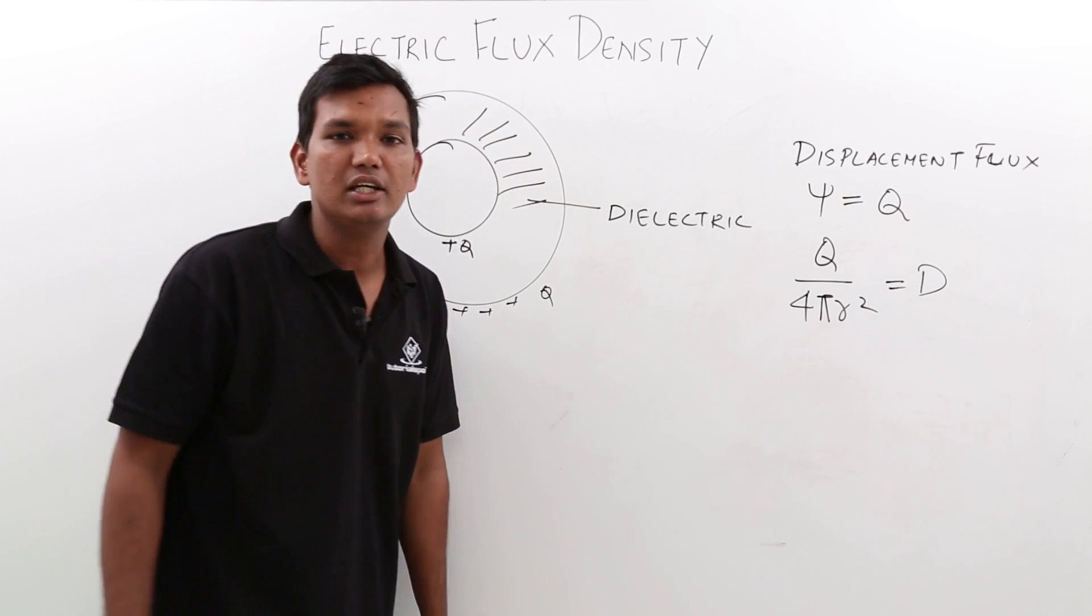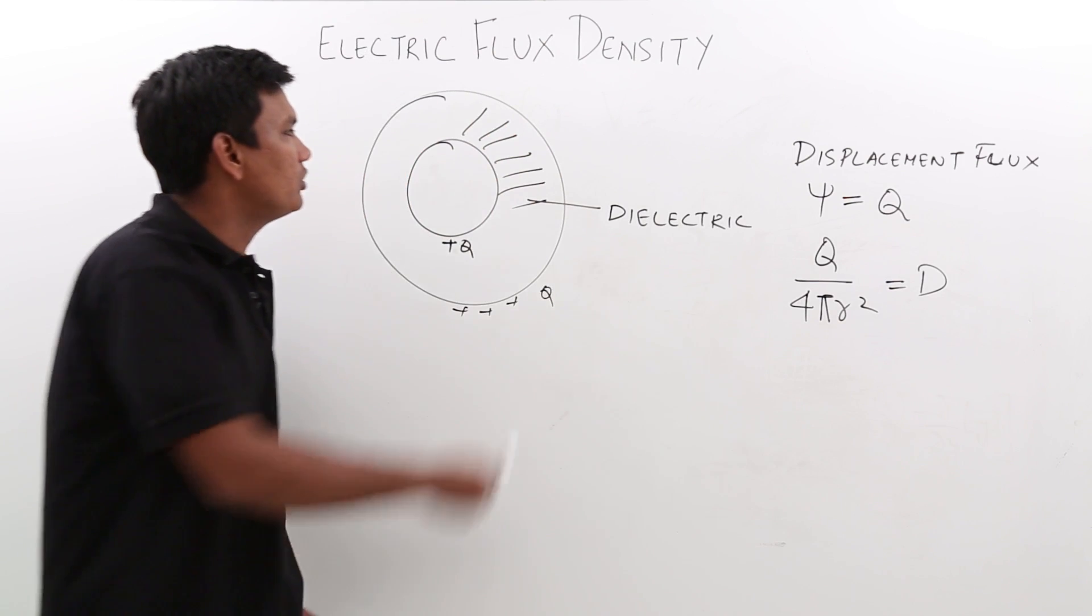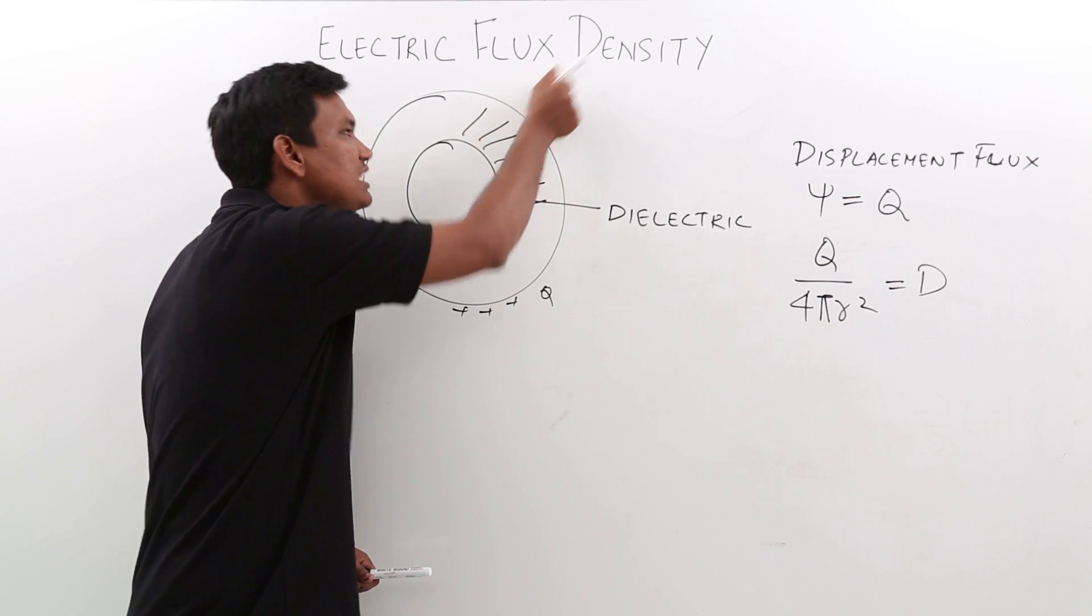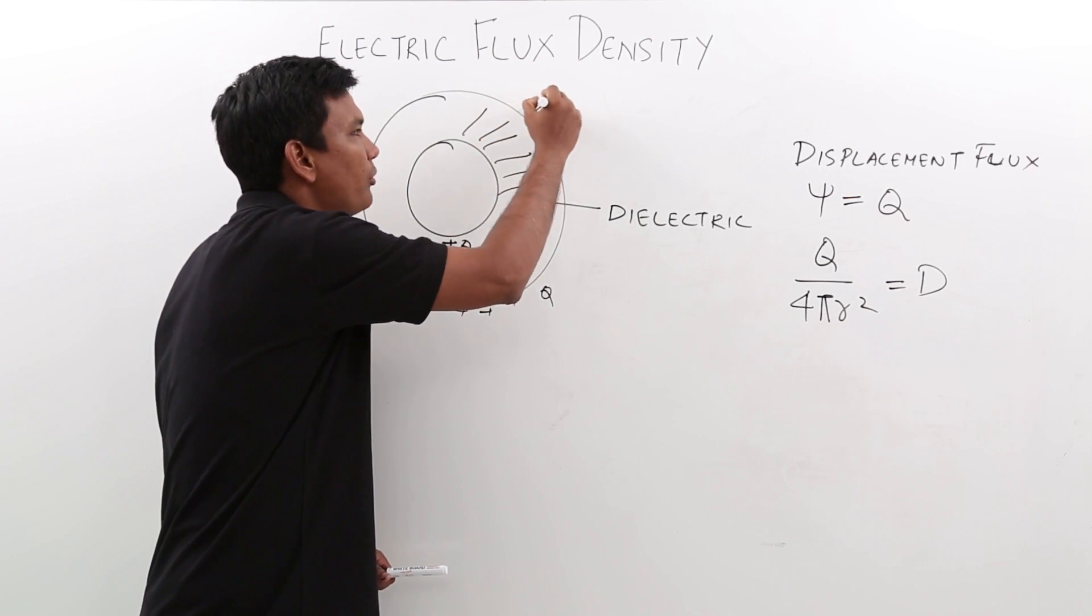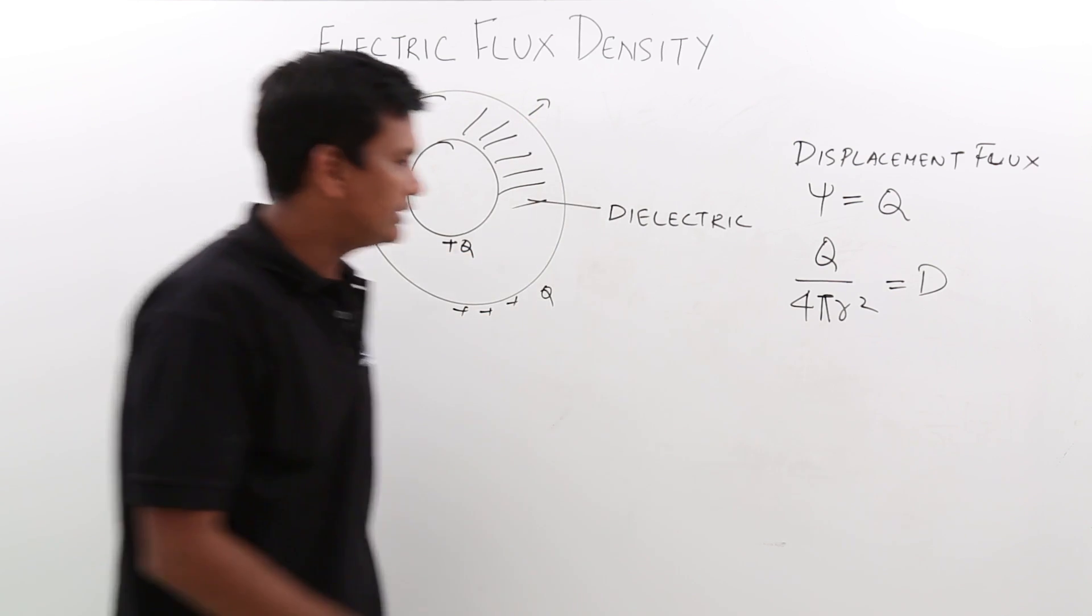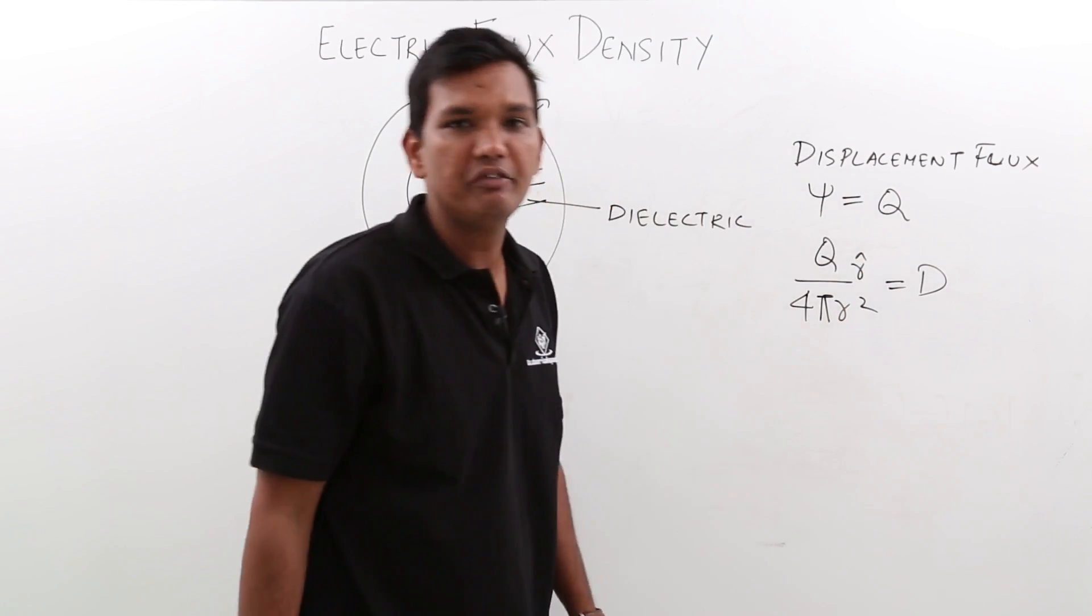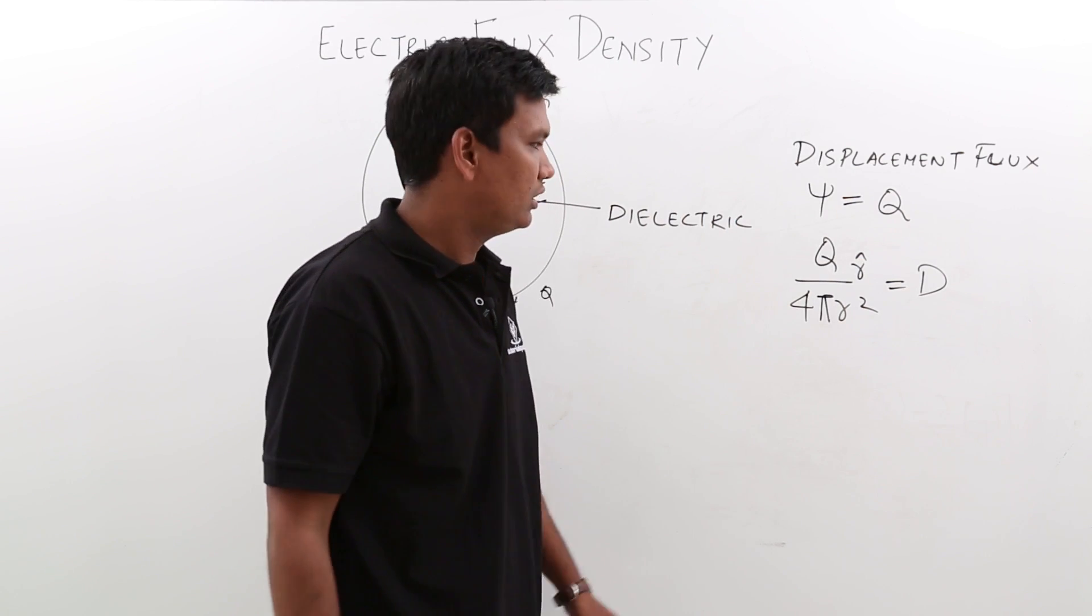Electric flux density will be a vector quantity because the flux lines, as they are leaving out of the surface, will be pointing outward. So this has to be an r̂ which will be a unit vector pointing in a direction.